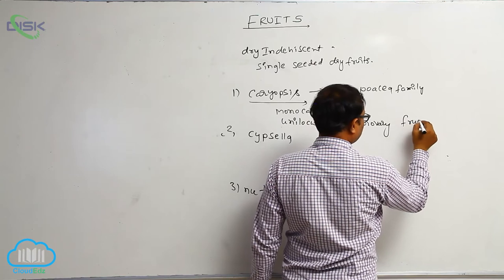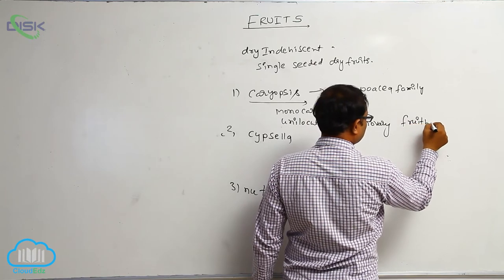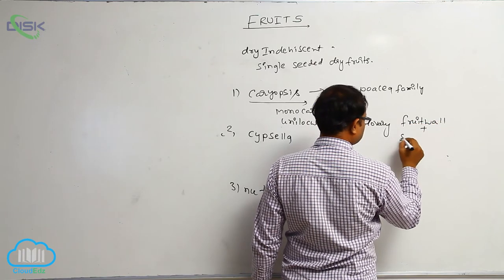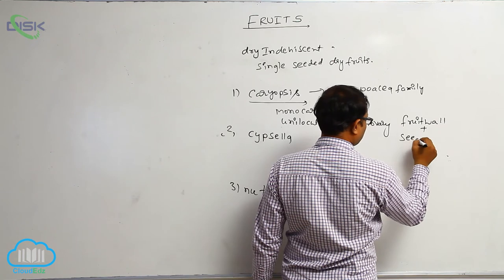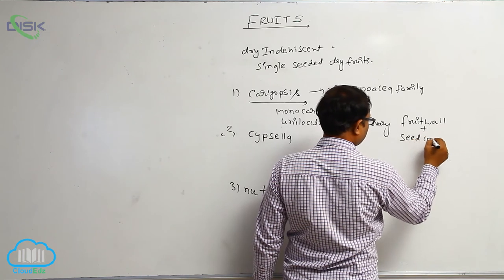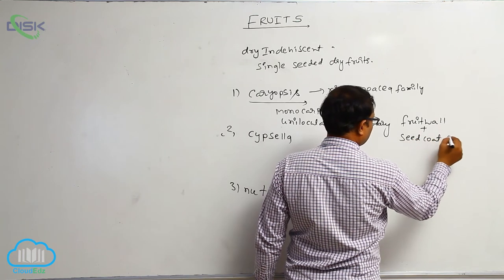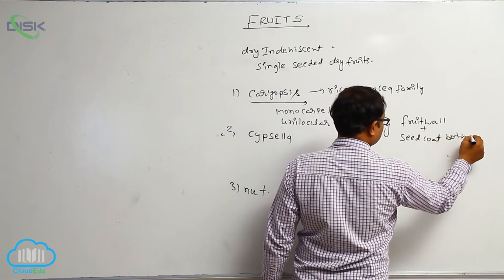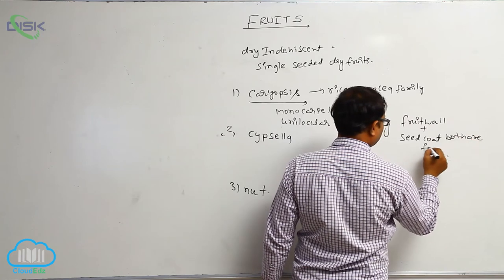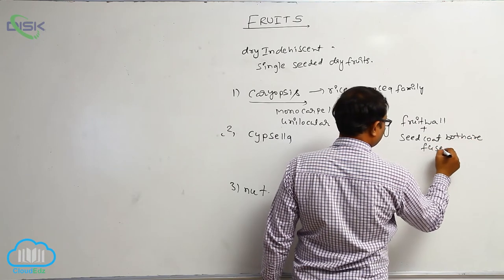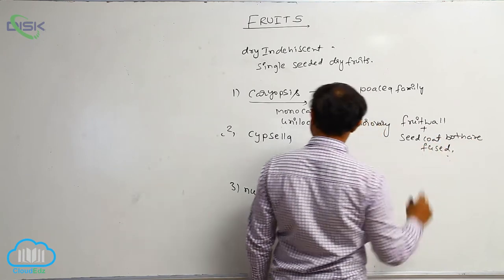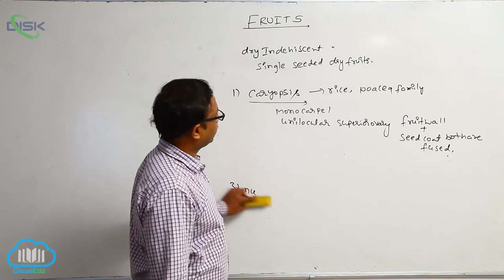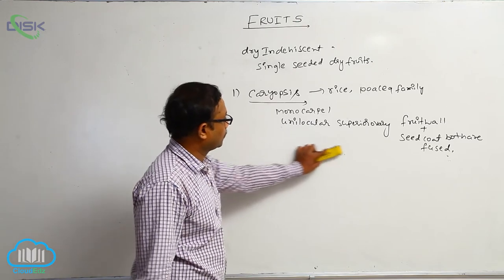An important point in caryopsis is that the fruit wall and seed coat are both fused together in physical condition. So that is known as caryopsis.